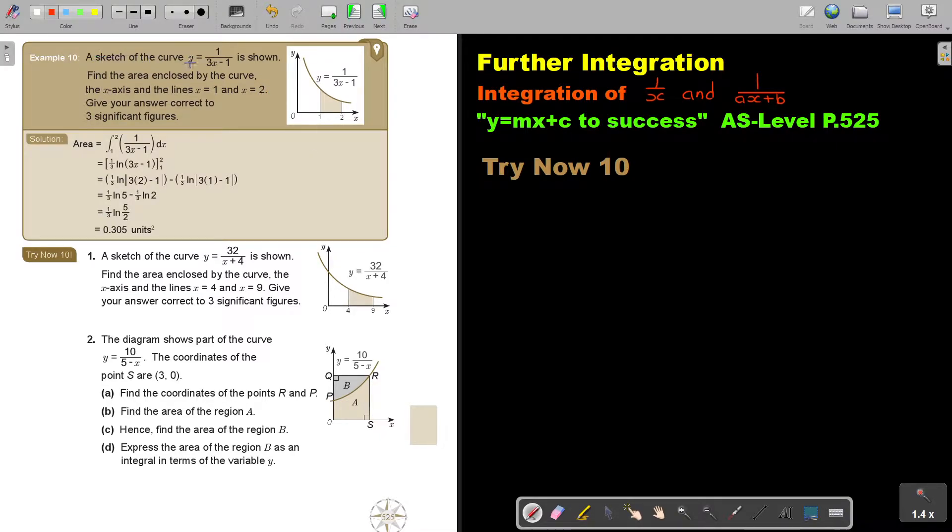Let's look at another example. A sketch of the curve y equals 1 over 3x minus 1 is shown. Find the area enclosed by the curve, the x-axis, and the line x equals 1, x equals 2. Give your answer correct to three significant figures. As soon as they say this, you can use the calculator. Okay, but let's start.